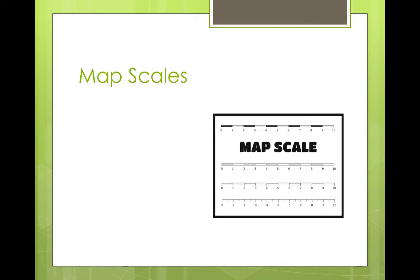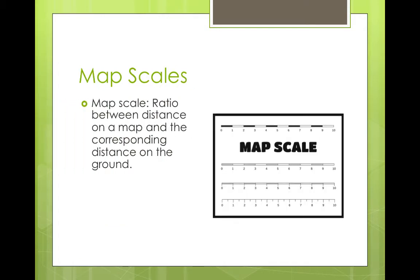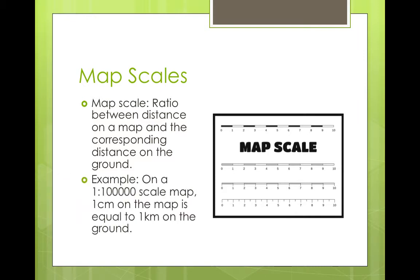Maps usually have scales. A map scale is the ratio between distance on a map and the corresponding distance on the ground. For example, on a 1 to 100,000 scale map, 1 cm on the map is equal to 1 km on the ground.